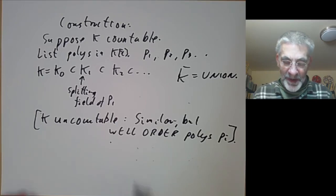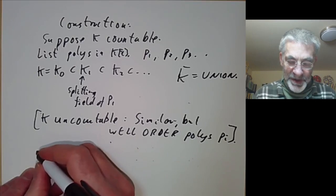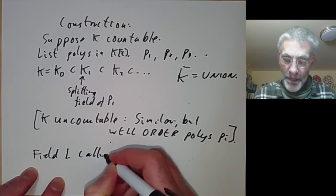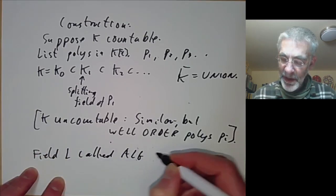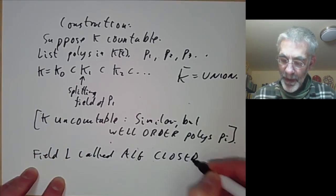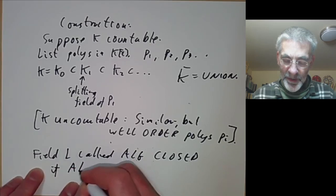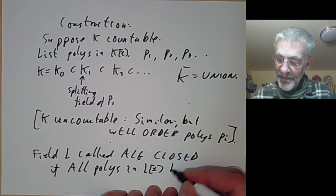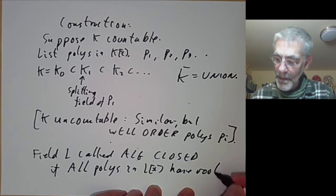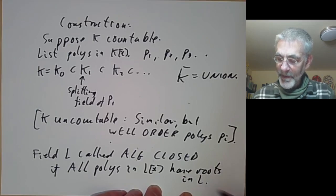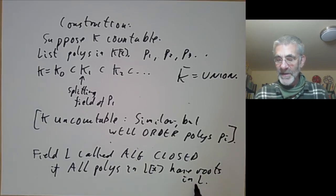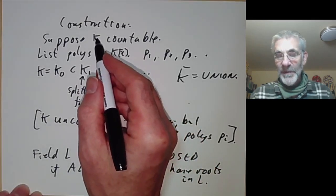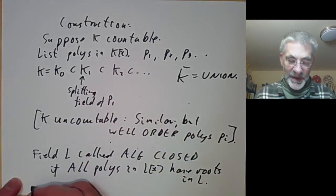A field is called algebraically closed — so field L is called algebraically closed — if all polynomials in L[x] have roots in L. In particular that means all polynomials factorise into linear factors, and the algebraic closure of k that we've constructed is algebraically closed.